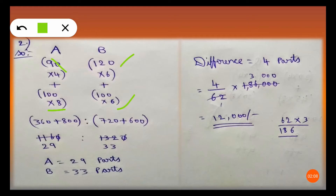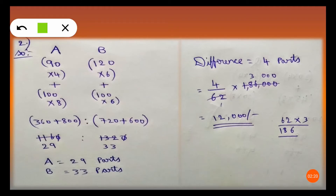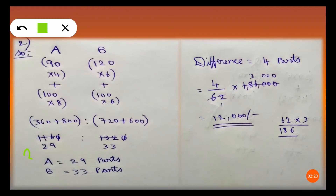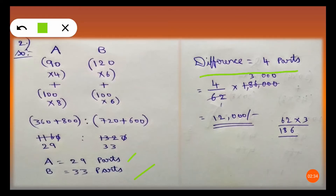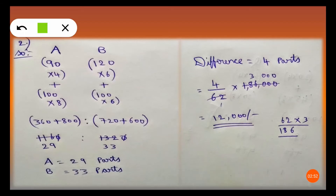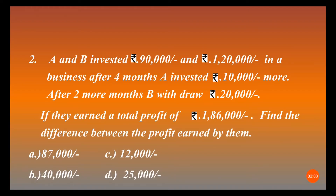After simplification: A gets 90 into 4 = 360, plus 100 into 8 = 800; B gets 120 into 6 = 720, plus 100 into 6 = 600. After cancelling by 4, A has 29 parts and B has 33 parts. The difference is 4 parts. So 4 divided by total parts (29 + 33 = 62), multiplied by 1 lakh 86,000, gives 12,000 rupees. The difference between their profits is 12,000 rupees. Option C is the correct answer.